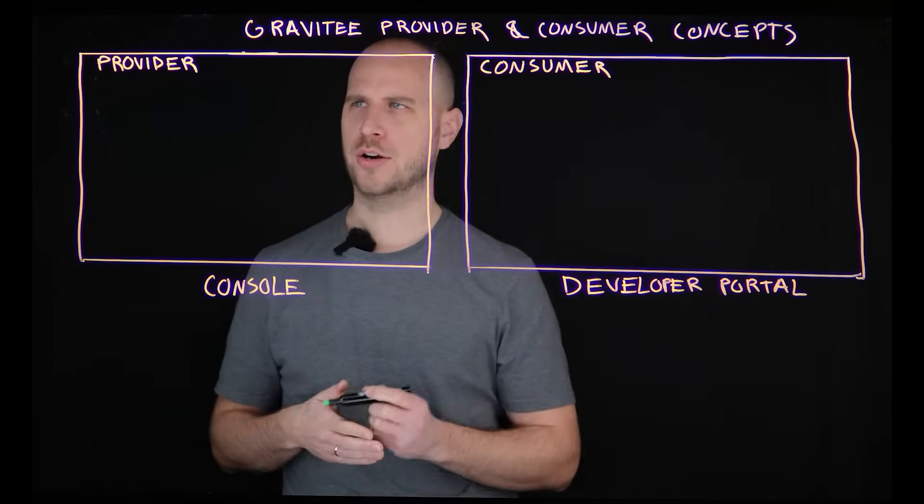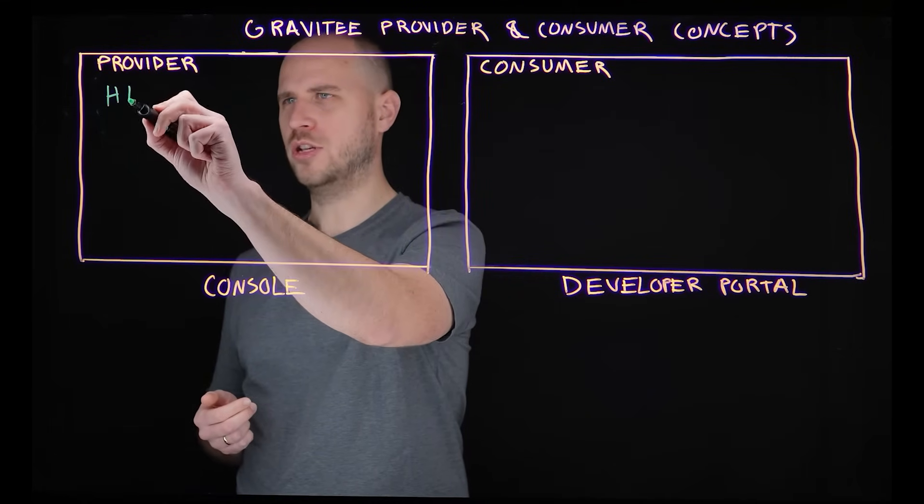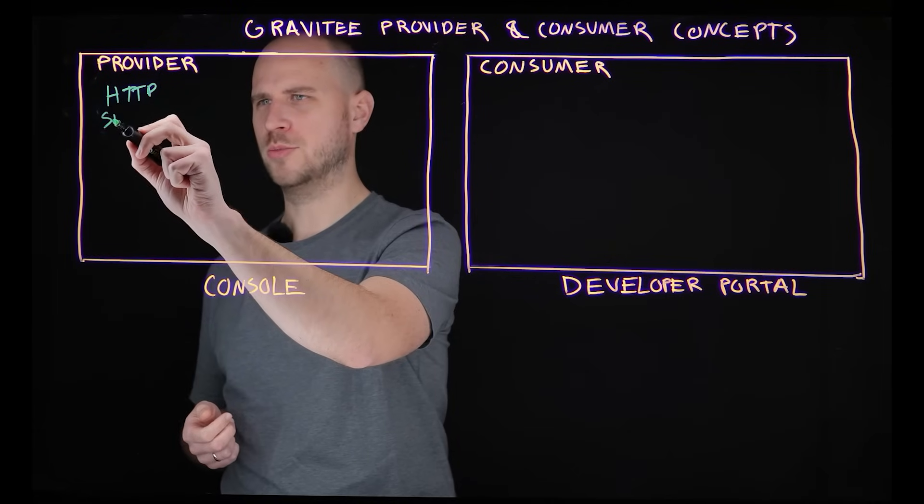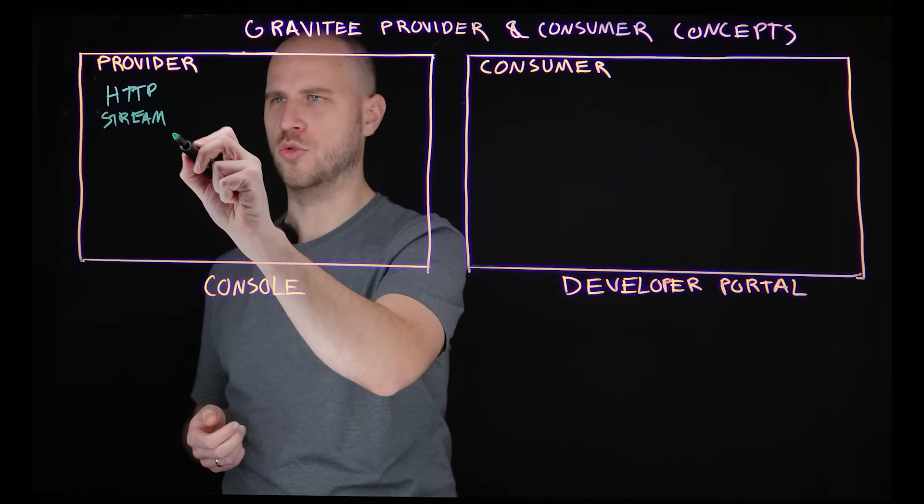So if you're an API provider that needs to expose this data, typically you will have something like an HTTP service, or you might be having something like Kafka or Solace, so maybe some streaming technology as well that you need your users to interact with.